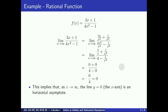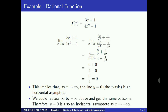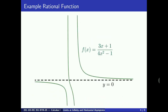So this implies that as x approaches infinity, the line y equals 0, which is the x-axis, is a horizontal asymptote. We could replace infinity by minus infinity above and get the same value for the limit. Therefore, y equals 0 is also a horizontal asymptote as x approaches minus infinity. The following figure shows the graph of f, confirming that at both extremities the x-axis is a horizontal asymptote.